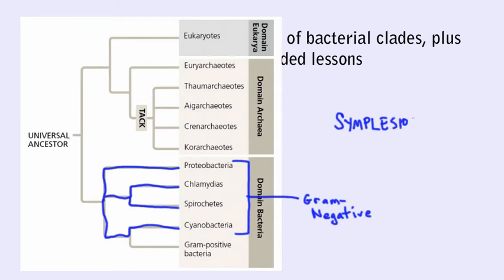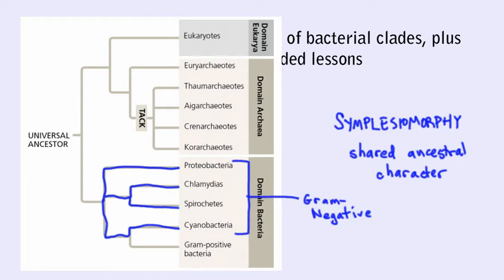We use the term symplesiomorphy rather than synapomorphy to describe a trait like this, where it's shared by all members but also shared with other members of the lineage stretching back to before the most recent common ancestor. The gram-negative cell wall is the ancestral state for all cells of the domain Bacteria. While all proteobacteria are gram-negative, it's not at all appropriate to say that they are THE gram-negative bacteria. That said, with few exceptions the medically important gram-negative bacteria are in the proteobacteria — among the exceptions being the spirochetes and the chlamydia, both medically important and gram-negative, but not proteobacterial.